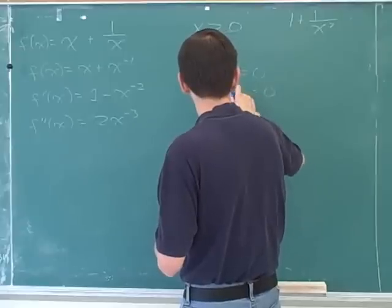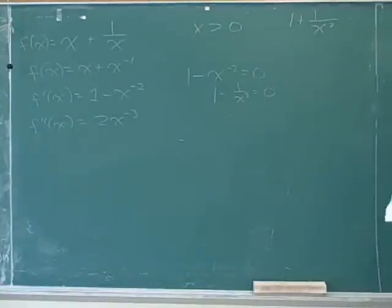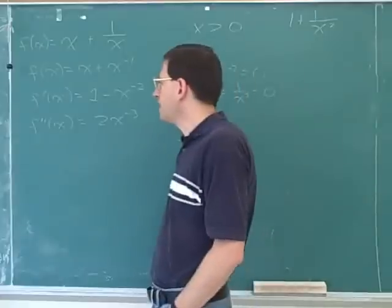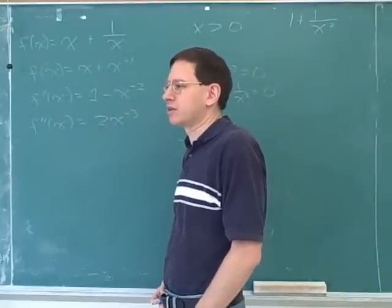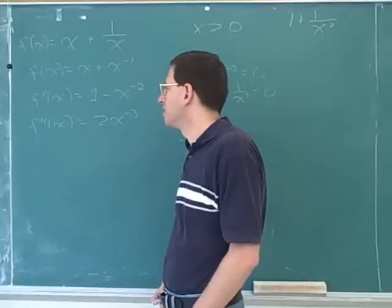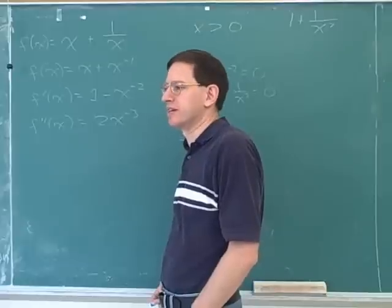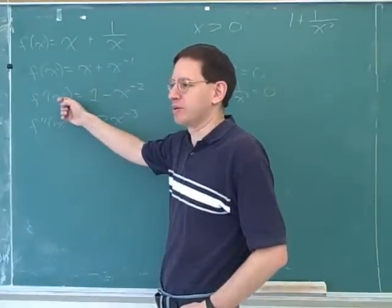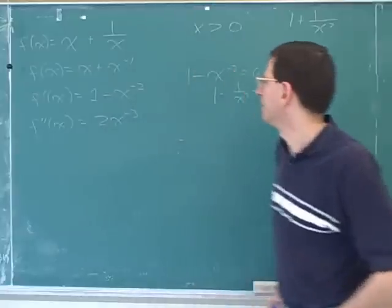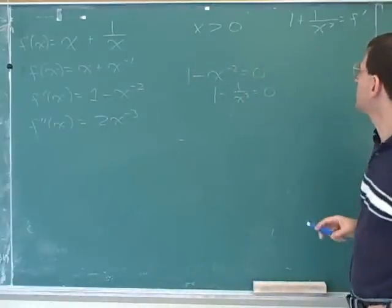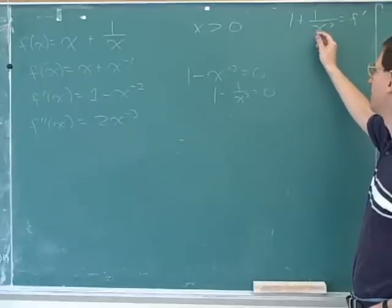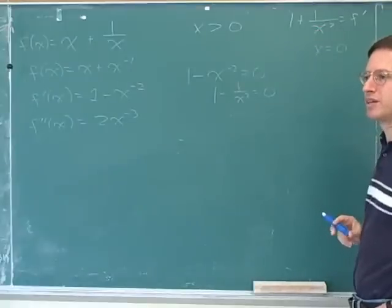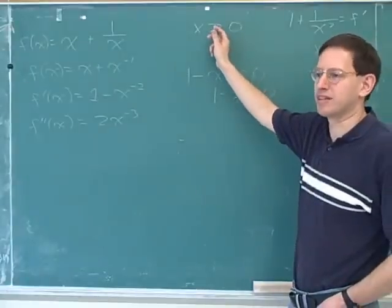To clarify: the critical points are any x that makes the first derivative zero, or any x that makes the first derivative undefined. X is never undefined because it's just an independent variable, but we want to know where this derivative could be undefined. You can see this derivative is undefined if we plug in zero for x, so x equals zero is also a critical point — but it's not relevant here because we're only looking at positive x's.